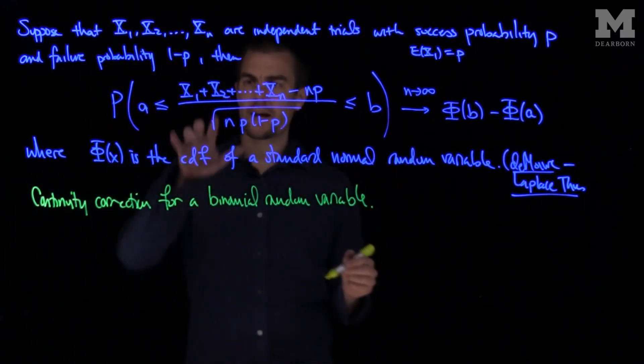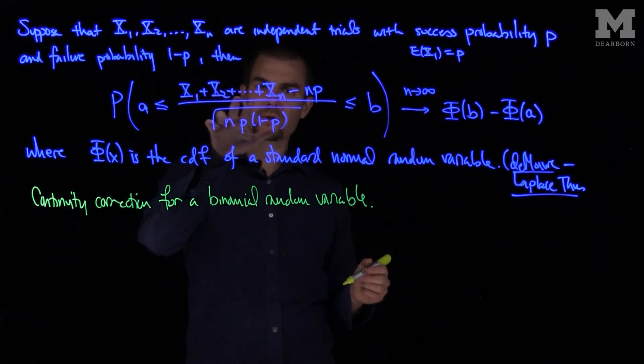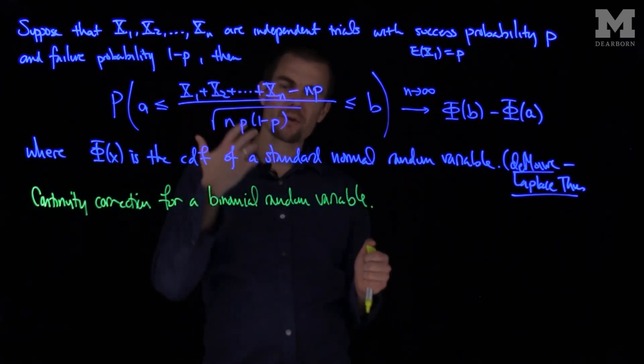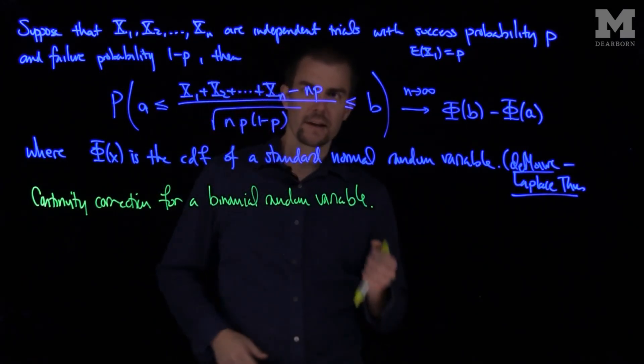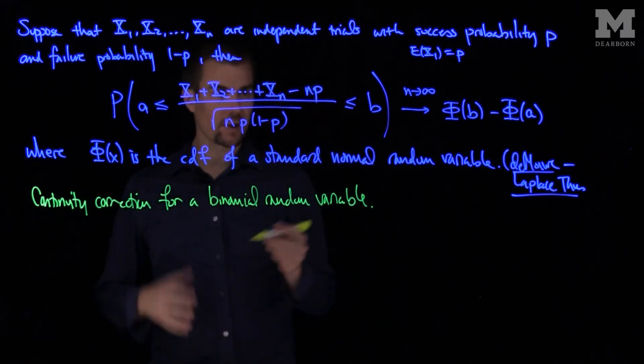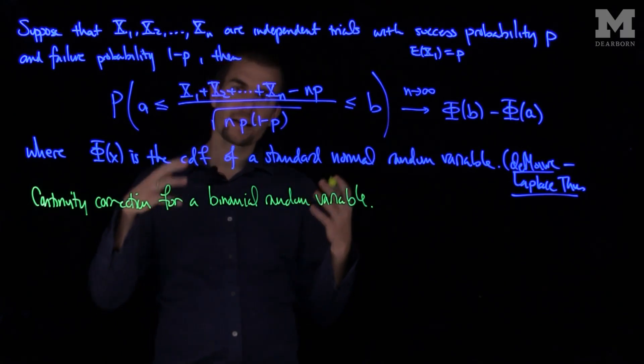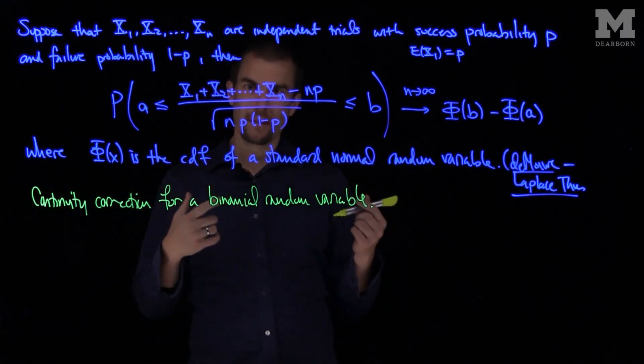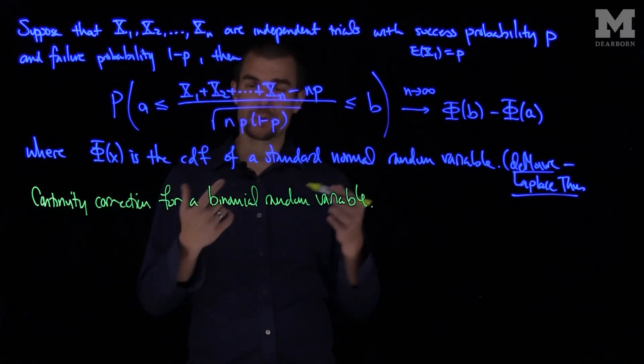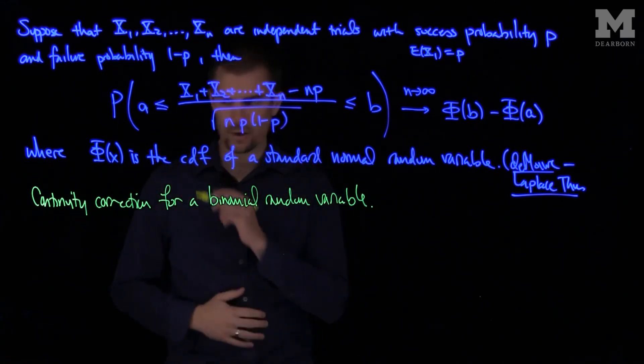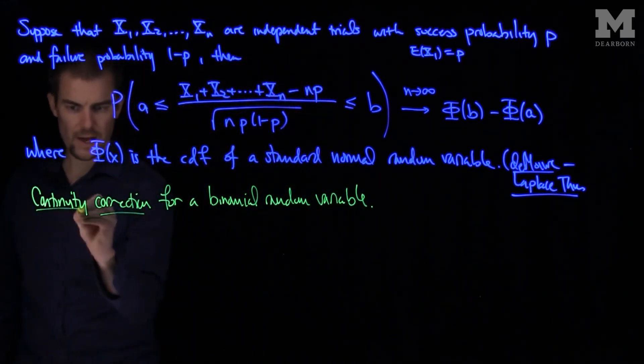So for example, what I have here is I have x1 plus x2 plus xn. We have a binomial distribution for that, and I have the mean and the variance. So we can say that this binomial, when n is large, if the number of trials is large, then I can approximate the probability that a binomial random variable is a particular value by using a continuity correction.